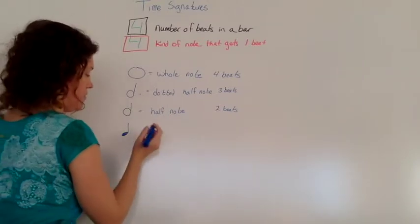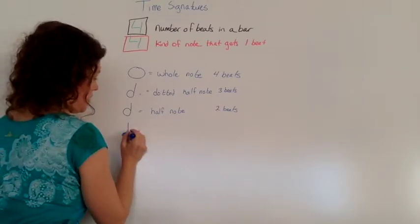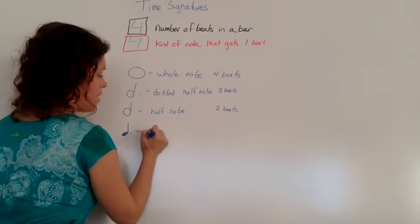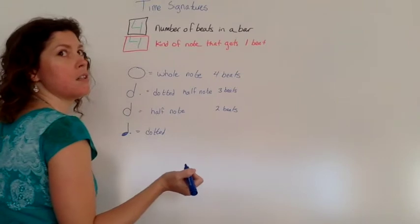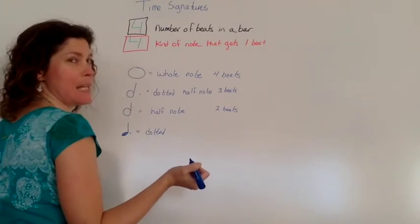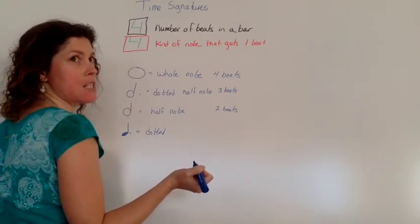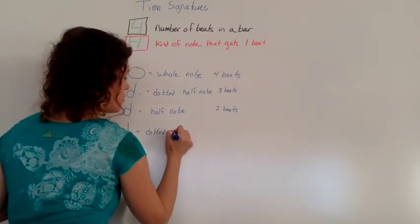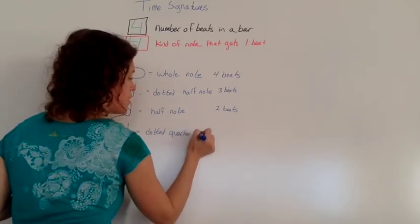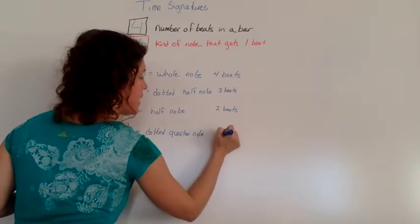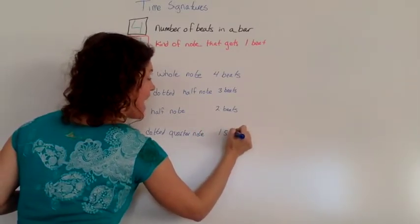There's that dot again. This would be a dotted what? Yes, it's a crotchet. Yes, it's a crotchet, but in North American language, it is dotted quarter note. And it has one-and-a-half beats.